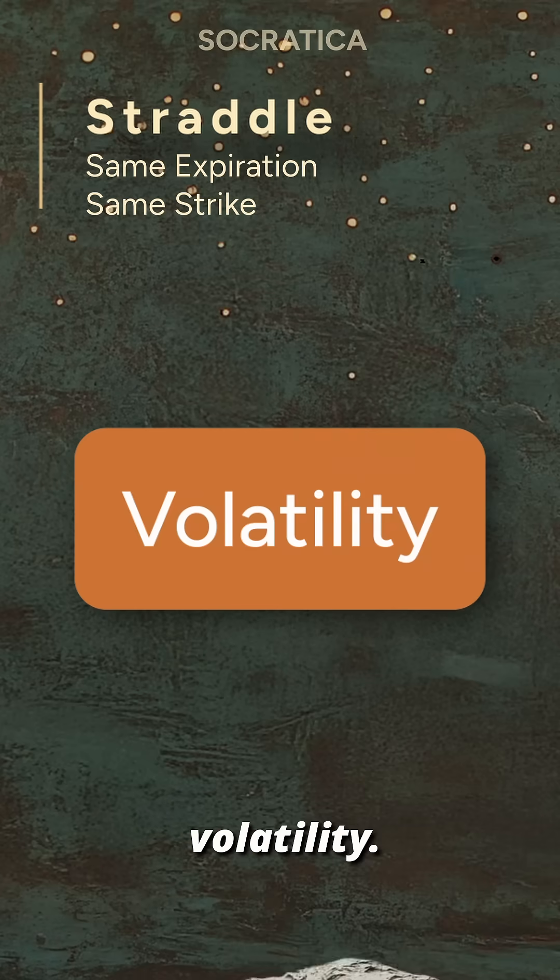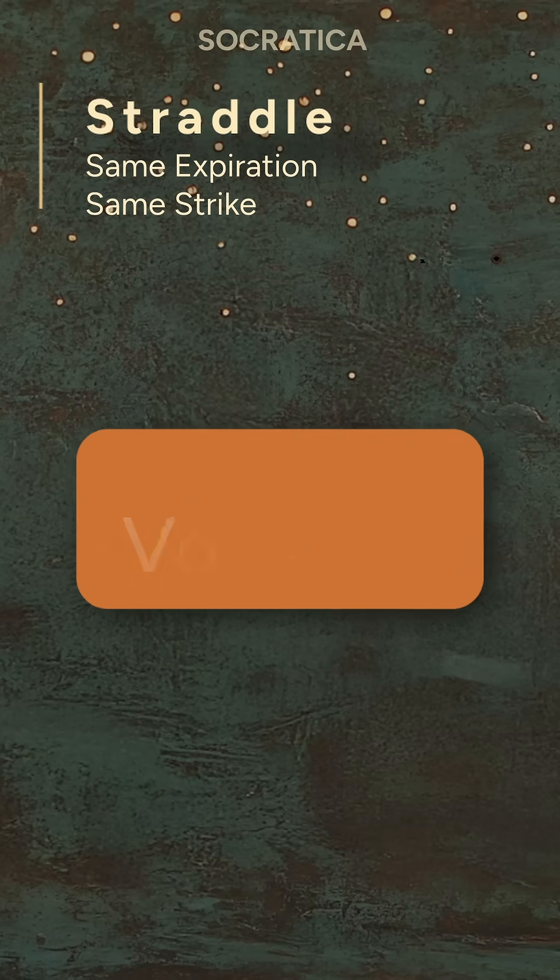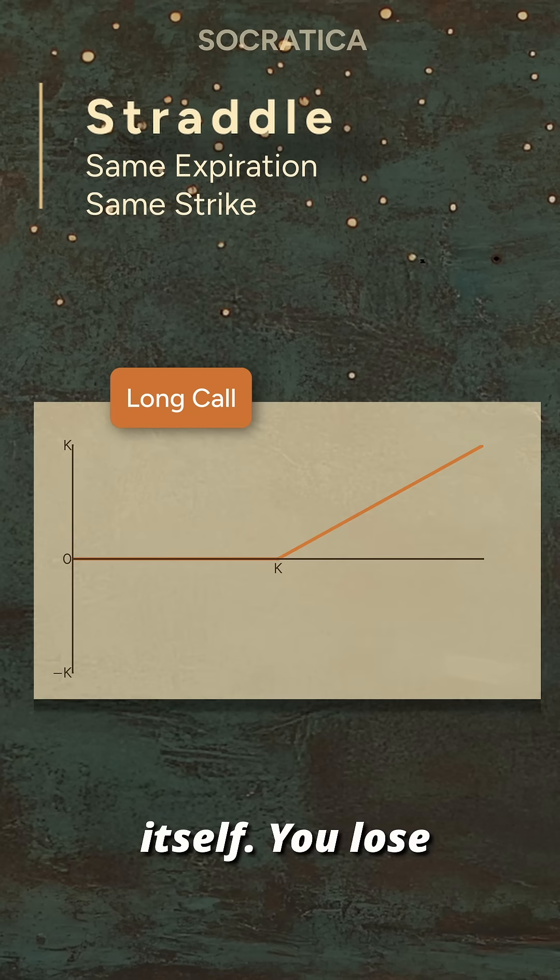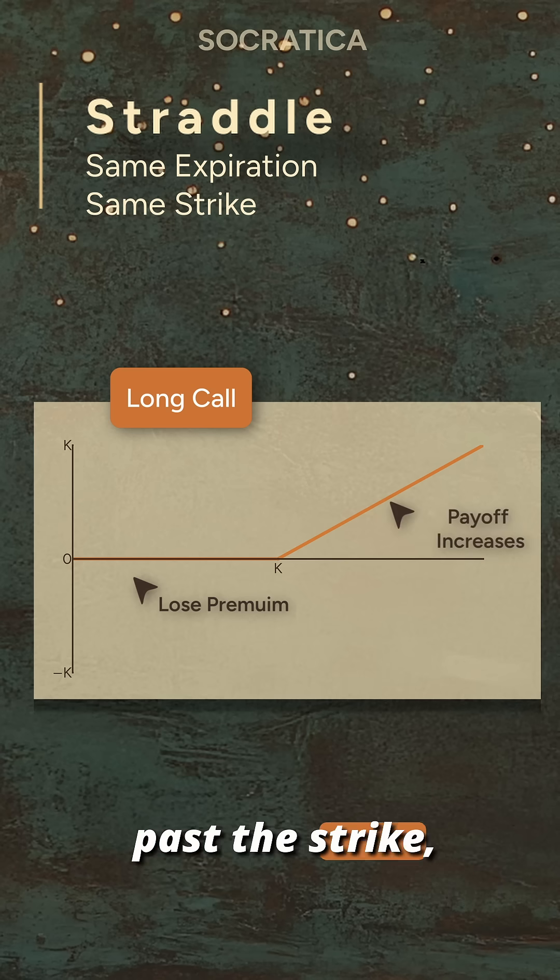The straddle is a bet on volatility. Let's look at the payoff diagram. First, the long call by itself. You lose the premium if the stock drops, but if it rises past the strike, the payoff increases with no cap.